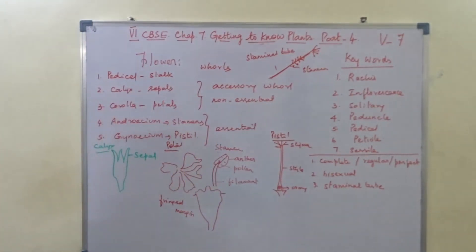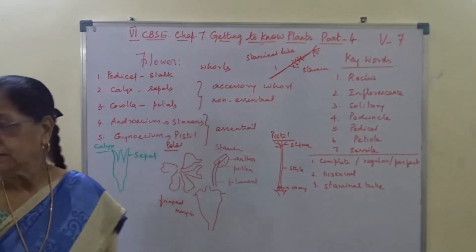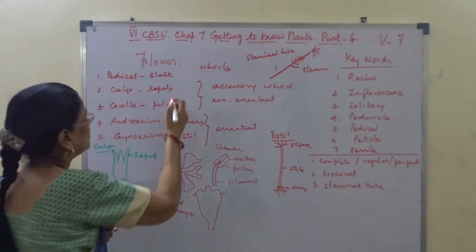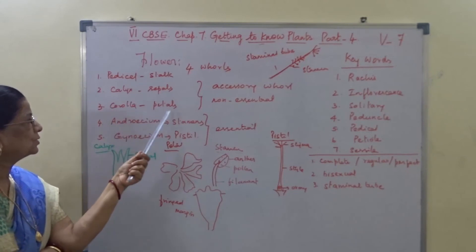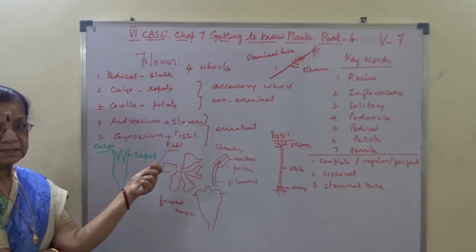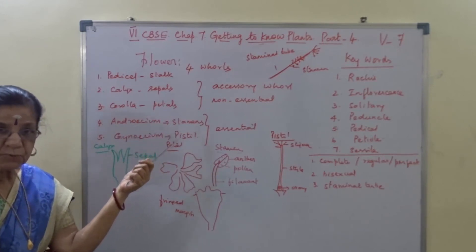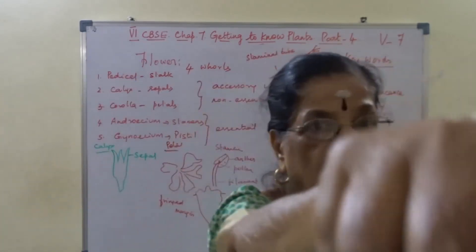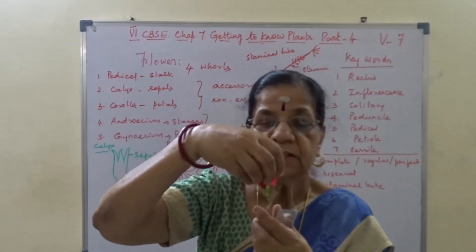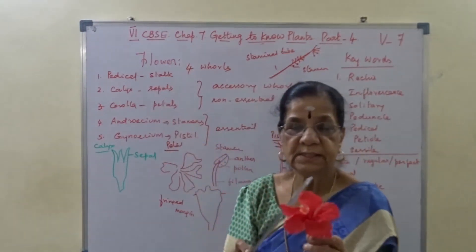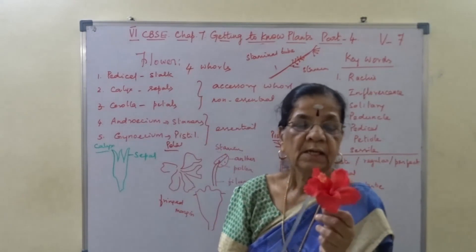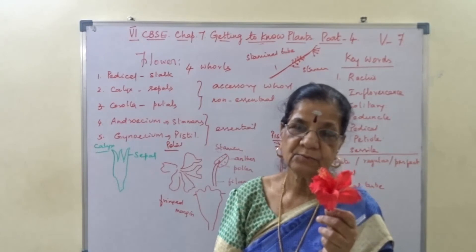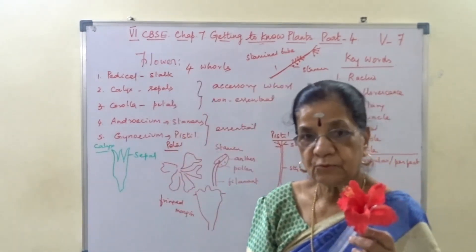Parts of the flower are formed of four whorls: calyx — formed of sepals; corolla — formed of petals; androecium — formed of stamens; and gynaecium — formed of pistil. Among these four whorls, calyx is the outermost whorl. The second one is corolla — the red color — formed of petals. Calyx protects the flower in bad condition. Function of calyx: it protects the flower in bad conditions.